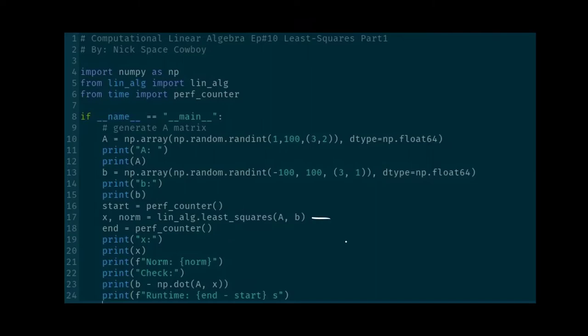In line 17, we are computing the least squares solution and norm by calling our function in our lin-alge package. And then we're outputting our least squares solution, the norm, and then we're also outputting our difference vector just so that we can get a better understanding of what's going on with our norm.